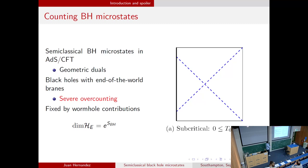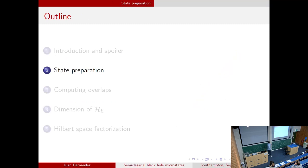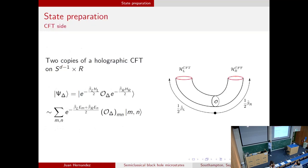What I'll be talking about is how this can be fixed by carefully including wormhole contributions in the semi-classical computation. The story is quite general, but for conciseness I'll be focusing on ADS-CFT with two asymptotic boundaries. We can start with two copies of holographic CFT defined on a sphere and build states that look like generalizations of a thermal field double, prepared by a Euclidean path integral where the Euclidean time preparation is interrupted by the insertion of a spherically symmetric operator with conformal dimension O.